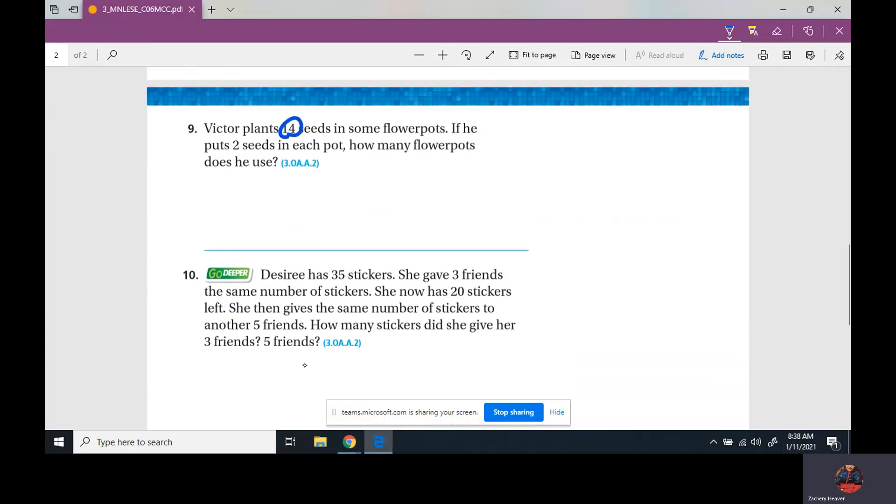Victor plants 14 seeds in some flower pots. If he puts two seeds in each flower pot, how many flower pots does he use? So we have our total and we have how many seeds. Let's do it right here. We have 14: one, two, three, four, five, six, seven, eight, nine, ten, eleven, twelve, thirteen, fourteen. So two in each flower pot. So here's one flower pot, two, three, four, five, six, seven. So he has 14, he puts two in each, which means seven flower pots.